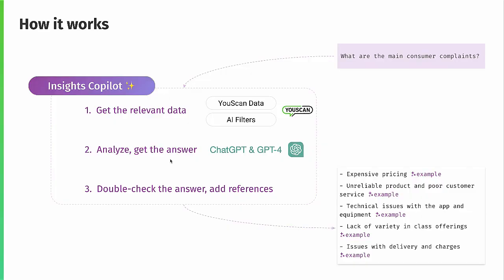A few words about Copilot's architecture. Under the hood, we use ChatGPT and GPT-4 APIs. Because it's not practical to use GPT to analyze all noisy social data, we optimize the data Copilot processes for fast response times and cost effectiveness. We apply Uscan's AI content filters, depending on the user's question, to choose the most appropriate data to send to the chatbot for analysis. Before presenting answers, we double-check references and show only answers that have reliable examples to support them.